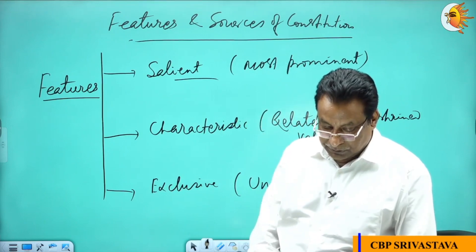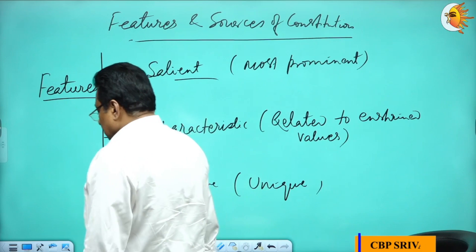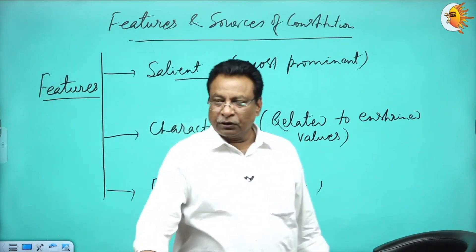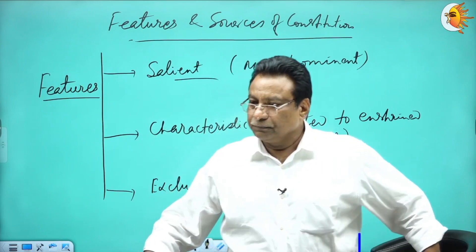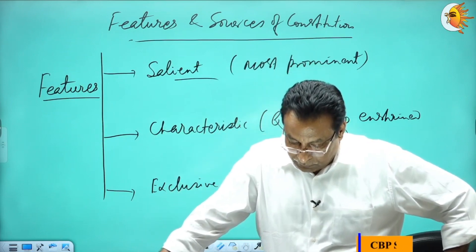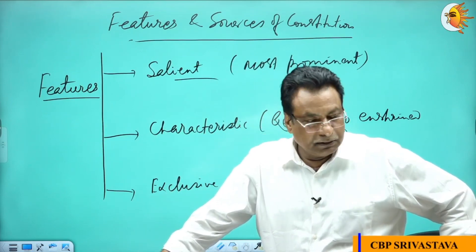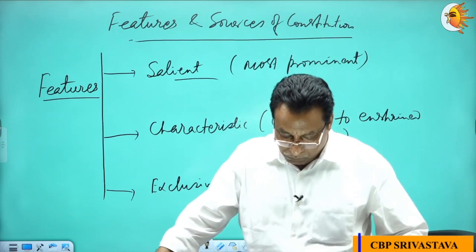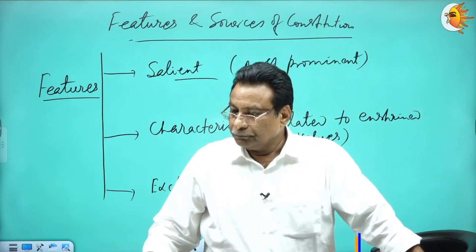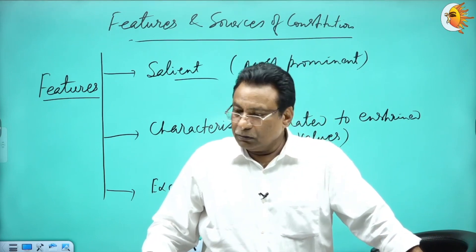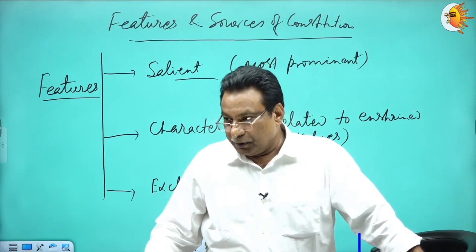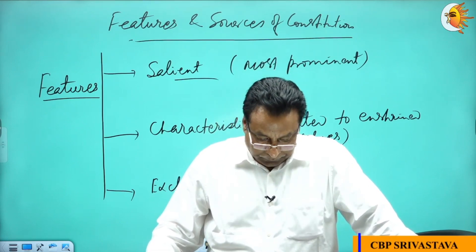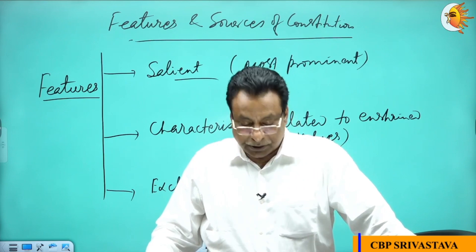Rule of law. Then single constituent authority — single constituent authority means only one authority can amend the constitution. Next is independent judiciary. Then popular sovereignty, meaning sovereignty with the people. Then single citizenship.